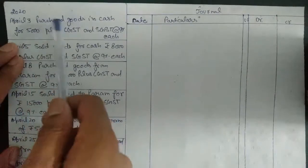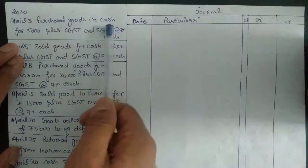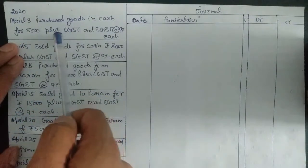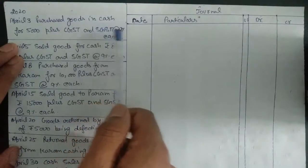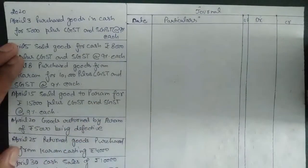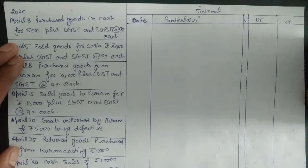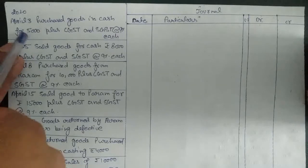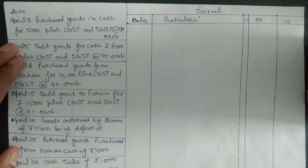The first entry is: purchased goods in cash for ₹5,000 and paid GST at 9% each. Here '9% each' means the slab rate is 18% — 9% we will pay to the central government and 9% to the state government. So the ultimate cost we need to pay is ₹5,000 plus 18%, which equals ₹5,900.